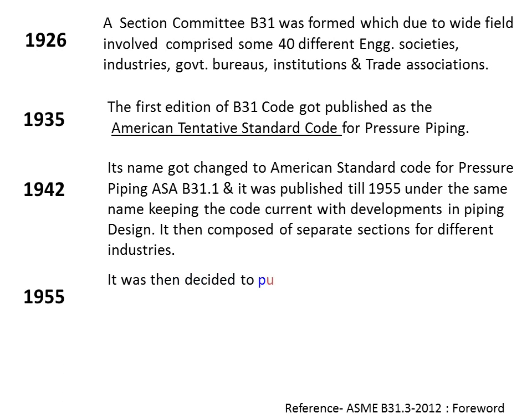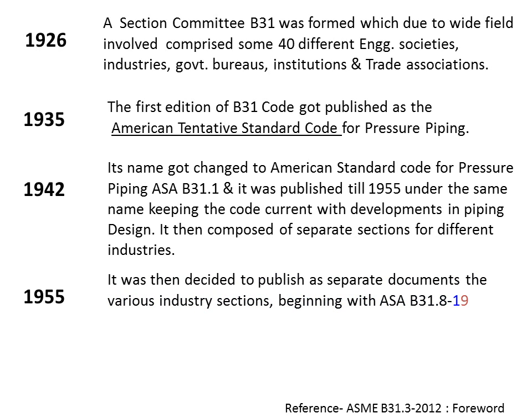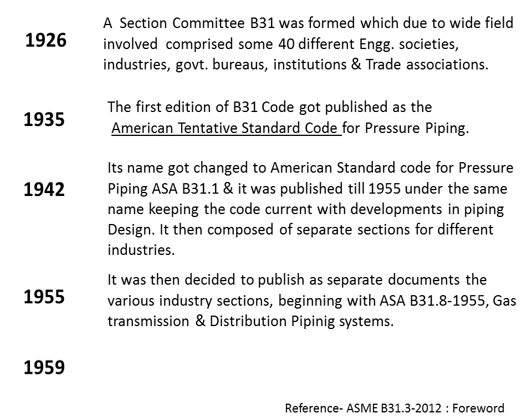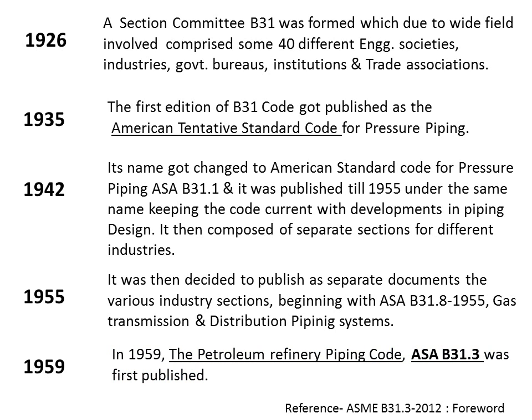In 1955, it was decided to publish separate documents for various industry sections, beginning with ASAB31.8, 1955, Gas Transmission and Distribution Piping Systems, as the first amongst them. Four years later, in 1959, the Petroleum Refinery Piping Code, ASAB31.3, was first published. This is referenced from B31.3, 2012.